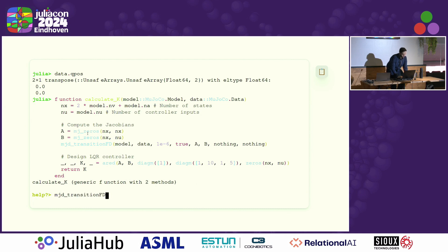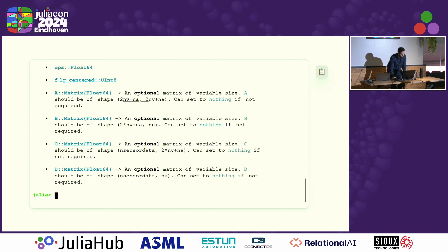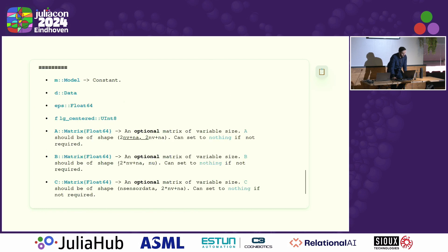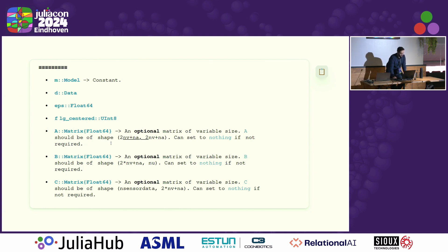Part of making things ergonomic is adding documentation to all functions. For example, you can see that mjd_transition is a finite difference method to calculate derivatives, and we tell you the input arrays, their expected types, and sizes — because these can be difficult to find by trawling through documentation. Everything is accessible in the REPL.